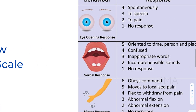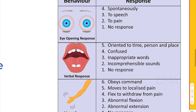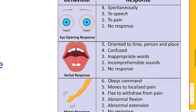When we say Glasgow Coma Scale, there are three main components to it. We evaluate three specific responses: eye opening response, verbal response, and motor response. We give a certain score to each of these responses.